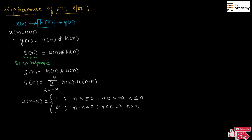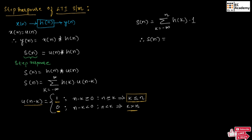Using this analysis for U of n minus k, we can write S of n as a summation from k equals minus infinity to n. Because for k less than or equal to n, U of n minus k equals 1, and for k greater than n, U of n minus k equals 0. Therefore, S of n is equal to the summation from k equals minus infinity to n of H of k. This is the step response of the LTI system for a discrete time system.